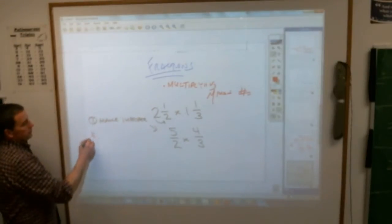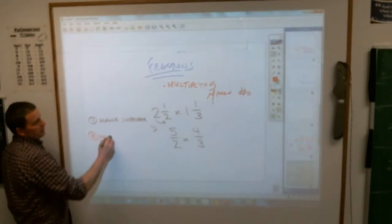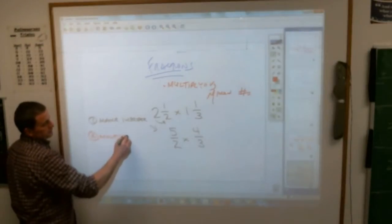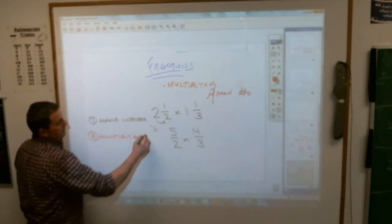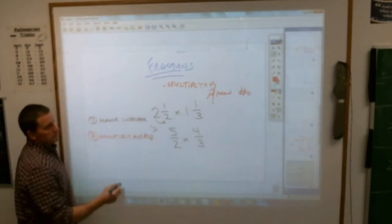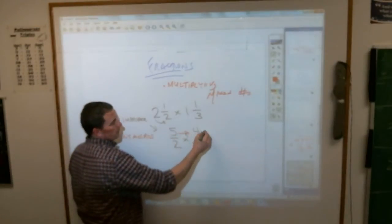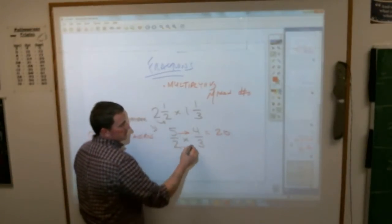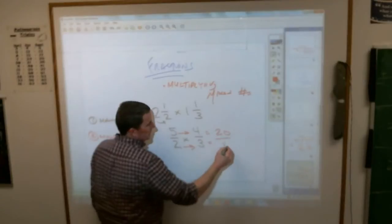Step number two is, like always, you multiply across. Multiply across means 5 times 4 equals 20, and 2 times 3 equals 6.